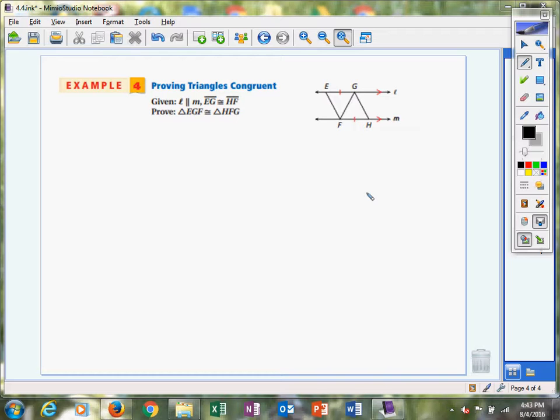Now, if you study the figure just a little bit, they've already marked for you this is given. We know that EG is congruent to FH. So I'm going to mark these sides right here, kind of darken them just a little bit so you can see it.